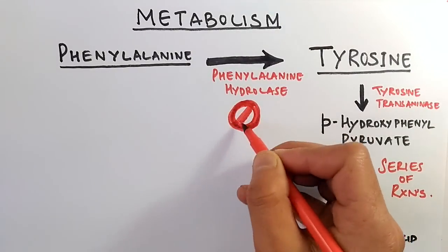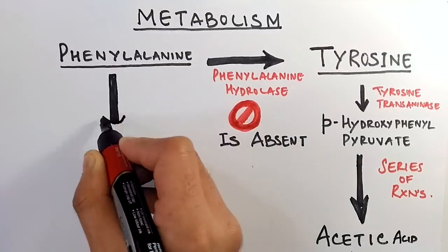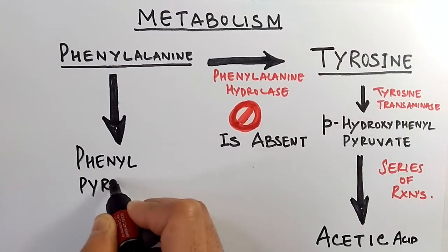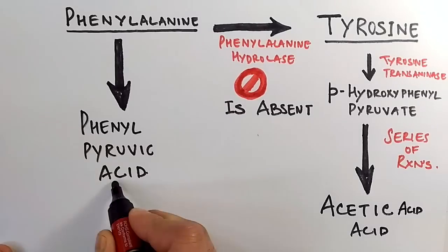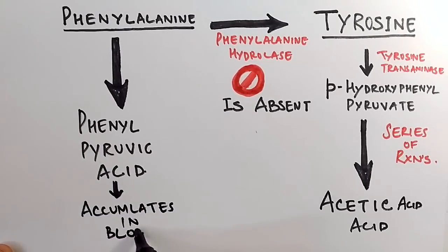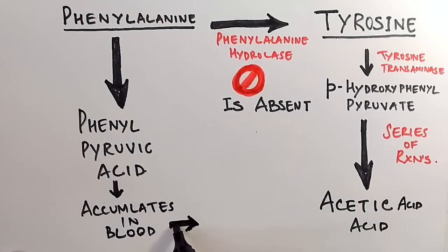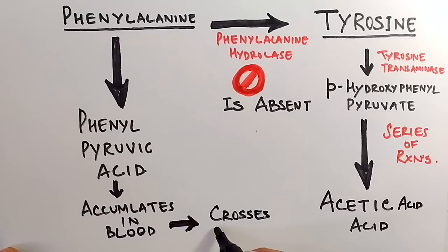But when the PAH encoding gene — the phenylalanine hydroxylase encoding gene — gets mutated, phenylalanine hydroxylase enzyme is not formed. In the absence of phenylalanine hydroxylase, phenylalanine is not converted into tyrosine, so phenylalanine remains in the blood. This phenylalanine ultimately gets converted into phenylpyruvate acid, which then accumulates in the blood.